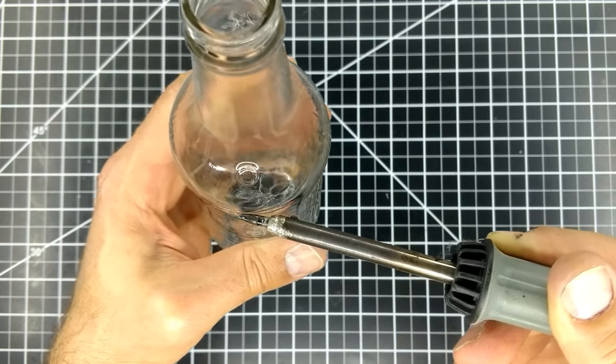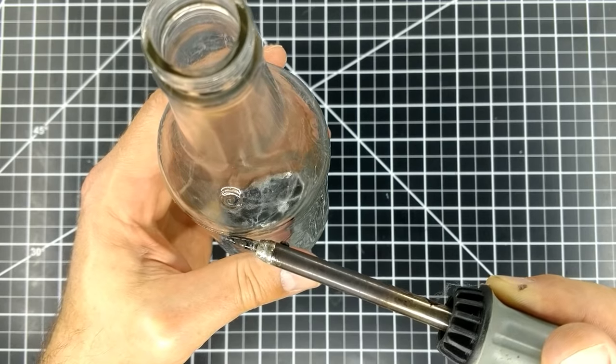To start the crack, hold the tip of the soldering iron in one spot for a few seconds, then move it a bit.